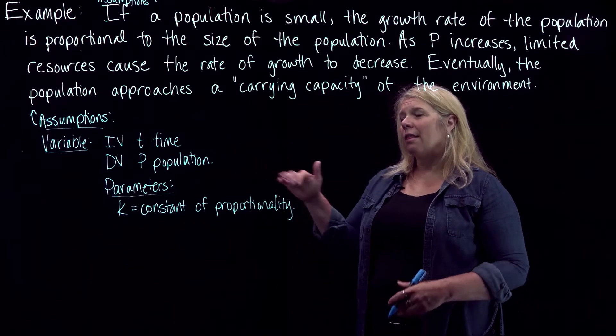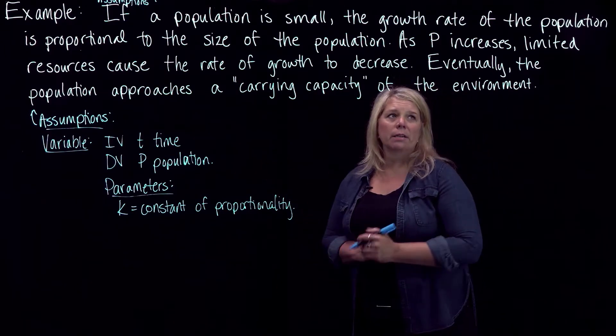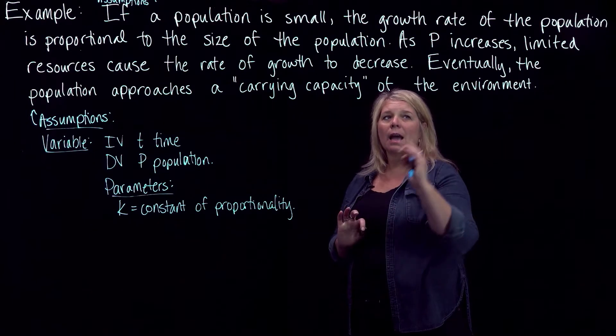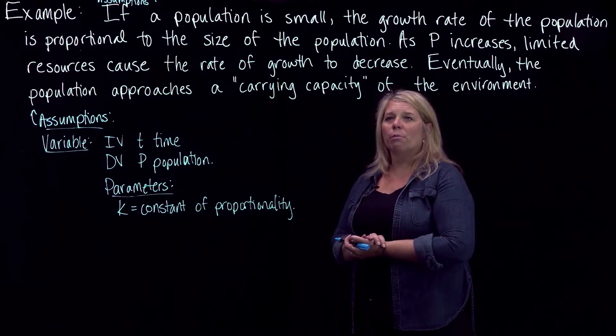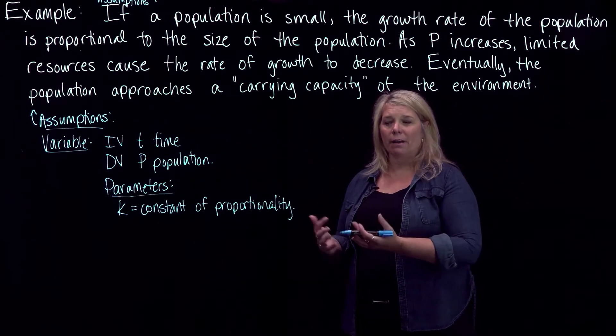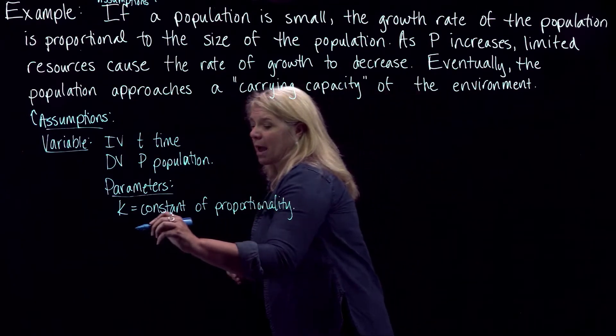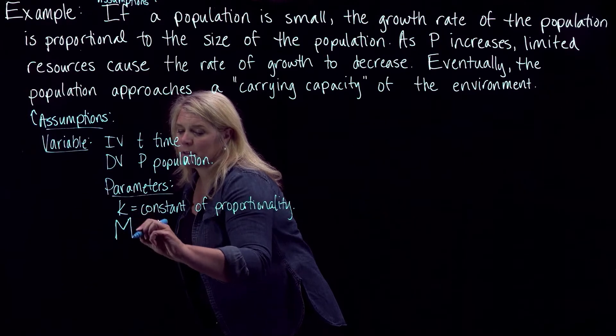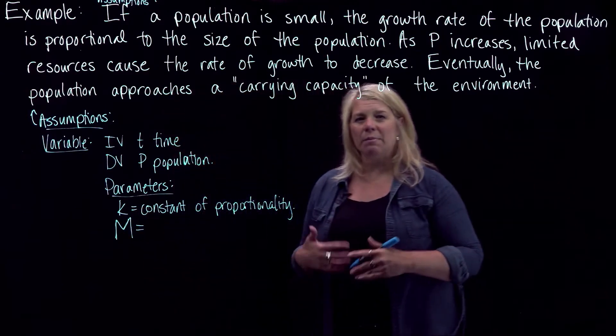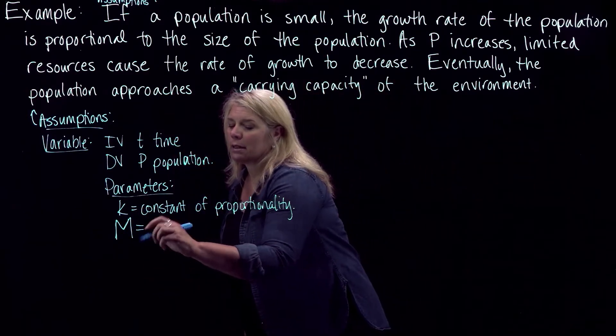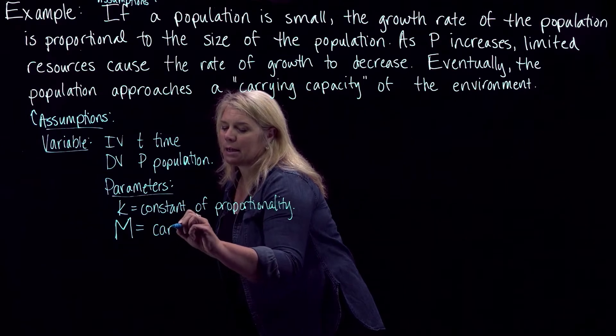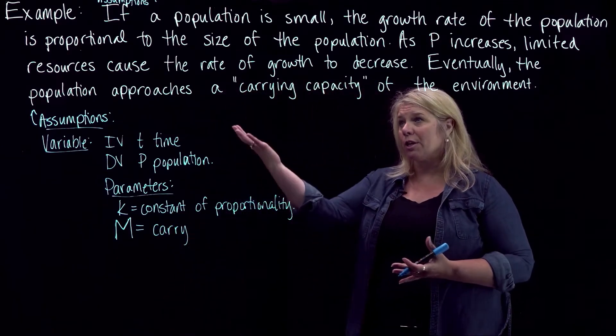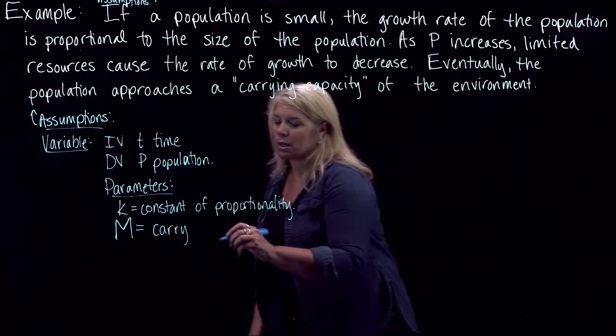But then we have another parameter that's described here as P increases, limited resources cause the rate of growth to decrease. And eventually the population approaches a carrying capacity of the environment. So that carrying capacity would be what the environment can hold. I'm going to use the letter M to represent that here for perhaps a maximum. But this would be the carrying capacity of the environment. So we don't necessarily know what that is, but that's a parameter that's evident in this description here.